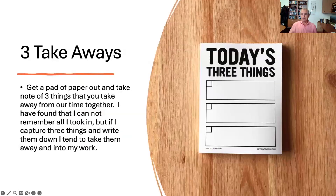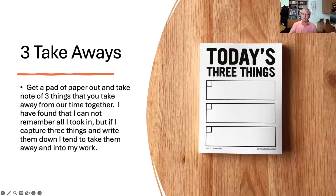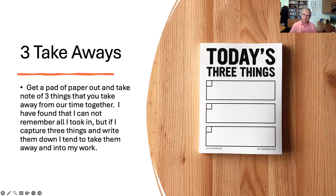Before we get going, I'm going to ask something of you. I want you to get out a piece of paper and write down three things that you take away from our time together. I find that if you can capture three things and write them down, they help you remember and have some takeaways when you're done. After this talk, I'd encourage you to send me the three things you took away so that I can learn about what impacted you.